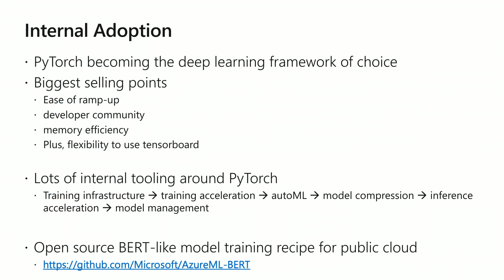In terms of internal adoption, PyTorch is becoming the deep learning tool of choice inside Microsoft. In terms of the biggest selling points, there are lots of arguments for and against, but the obvious ones are ease of ramp up, the strong developer community, memory efficiency — which is becoming very critical these days given the tendency for really large models — and the flexibility for using TensorBoard, which was talked about in an earlier talk today.